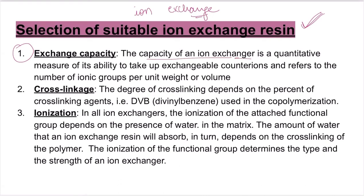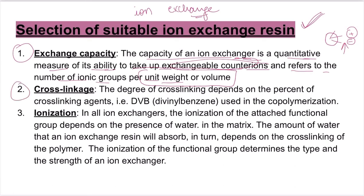The capacity of an ion exchanger is a quantitative measure of its ability to take up exchangeable counter ions, and refers to the number of ionic groups present per unit weight or volume. This is the first value of ionic groups.